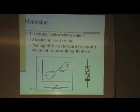It's kind of strange. It's a time-varying resistor, is what they call it. And the magnetic flux is a function of the amount of charge that has passed through the device, so it's a history-dependent device.